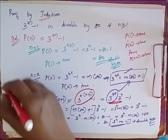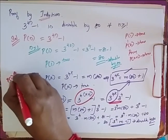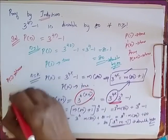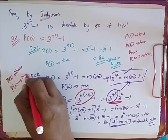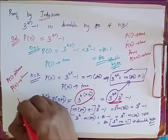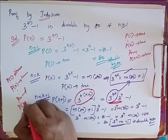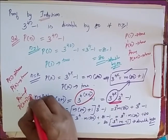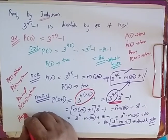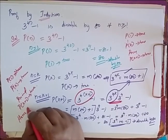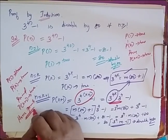So I have proved that it is true for P of 1, assumed true for P of K, and proved that it is true for P of K plus 1. Hence, this is true for all values where n is greater than or equal to 1.